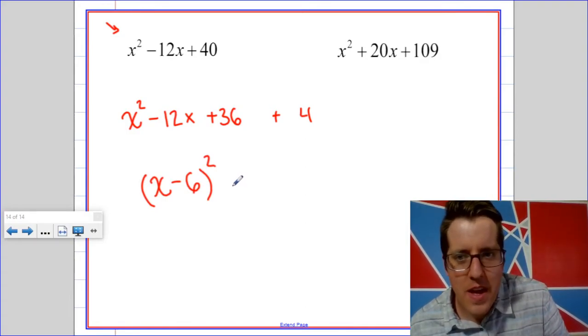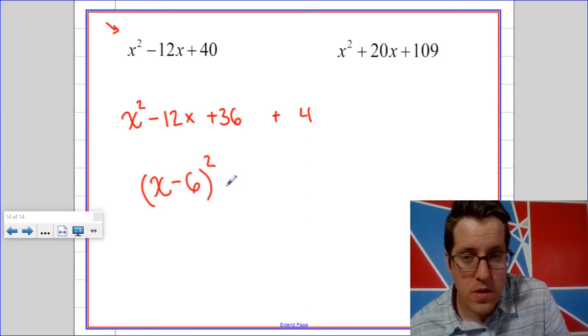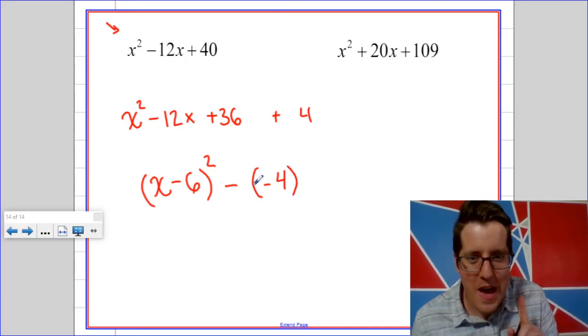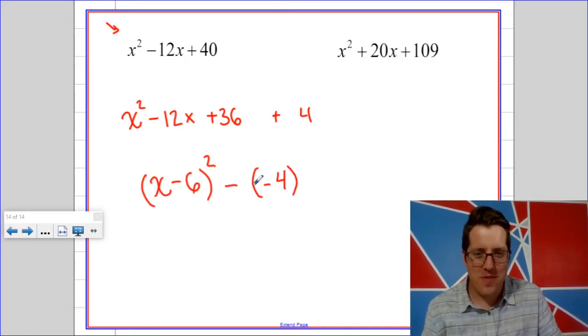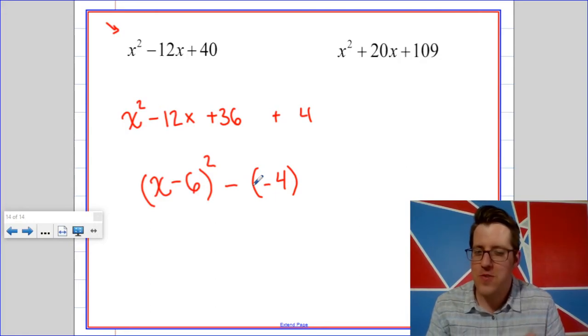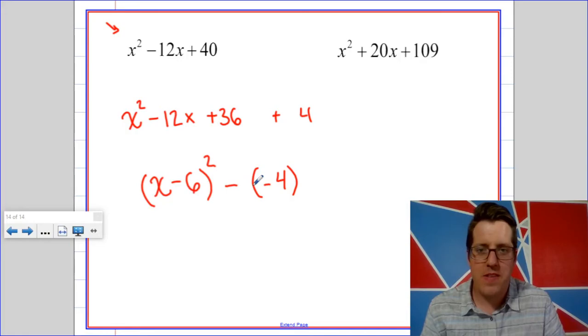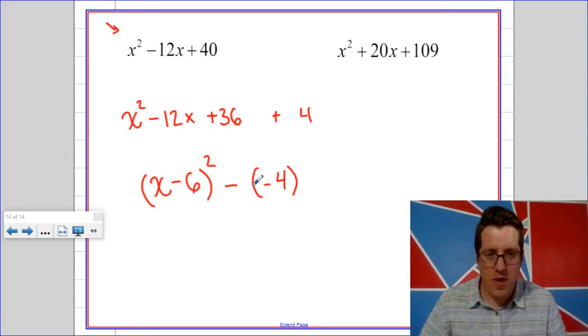Using the same idea as before, I'm going to say minus negative four. So now do you see that this is a difference of squares? The first square is x minus six squared and the second square is negative four. So here's how this would factor.